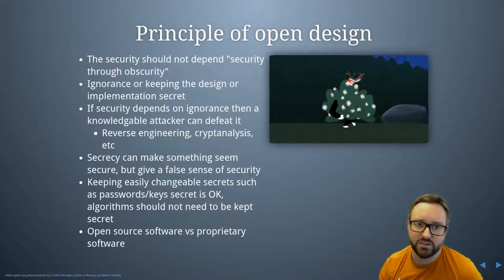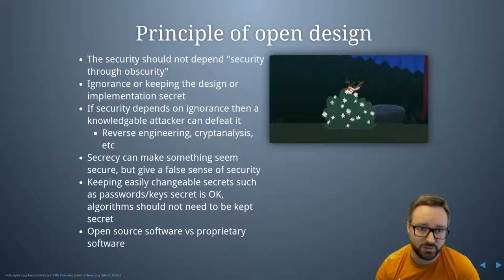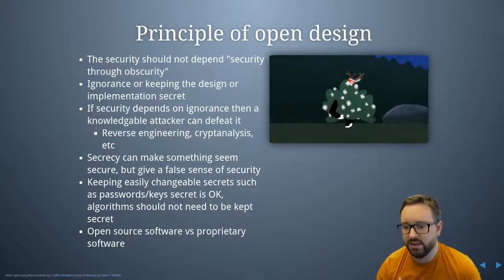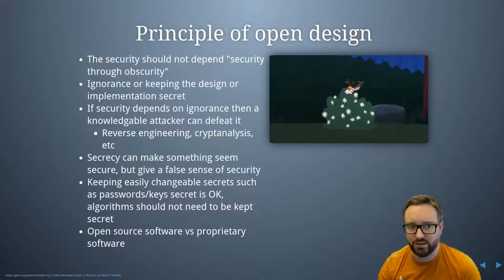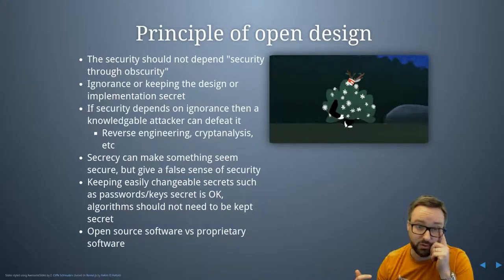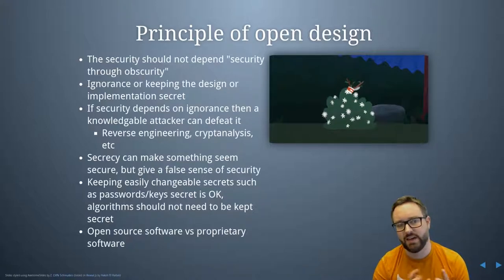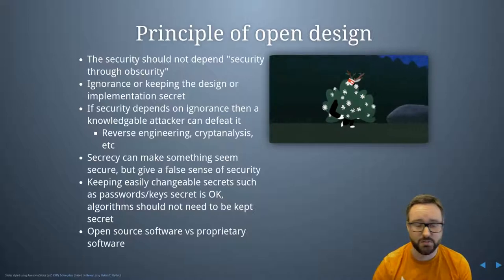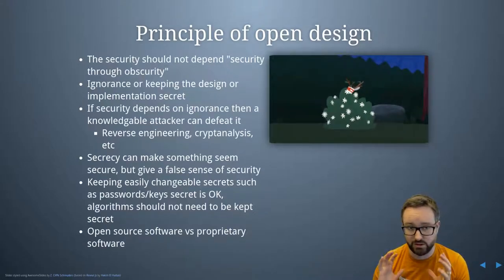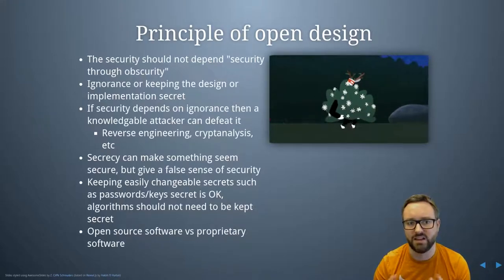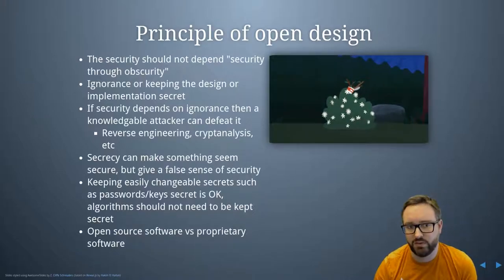Secrecy can make something seem secure but can also give a false sense of security. That's not to say there shouldn't be any secrets — it's okay to have passwords or keys that can be kept secret — but the algorithms that use those keys shouldn't rely on remaining secret. This relates to the open source versus proprietary software debate, but it's not to say closed source is less secure than open source. Even with closed source software, you shouldn't rely on the fact that no one has access to the code for the security to work.